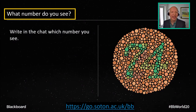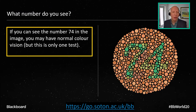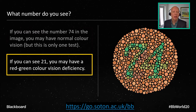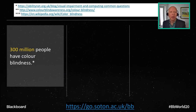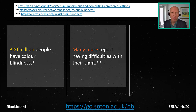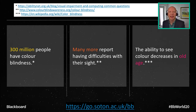So a quick exercise to start with. What number do you see here? Maybe write it in the chat or just think about it. So if you see the number 74 then you might well have normal colour vision, but this is only one test. If you see the number 21, you may have red-green colour vision deficiency, which is one of the most common forms of colour blindness.